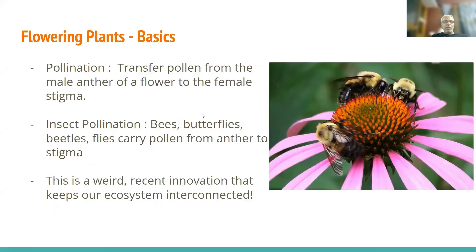Now, flowering plants basics — everybody knows this — plants don't flower because they look pretty to us. They flower because they want to have sex; they want to transfer pollen from the male anther of a flower to the female stigma. This can happen through a variety of different ways: wind, water, insects, birds, and mammals.